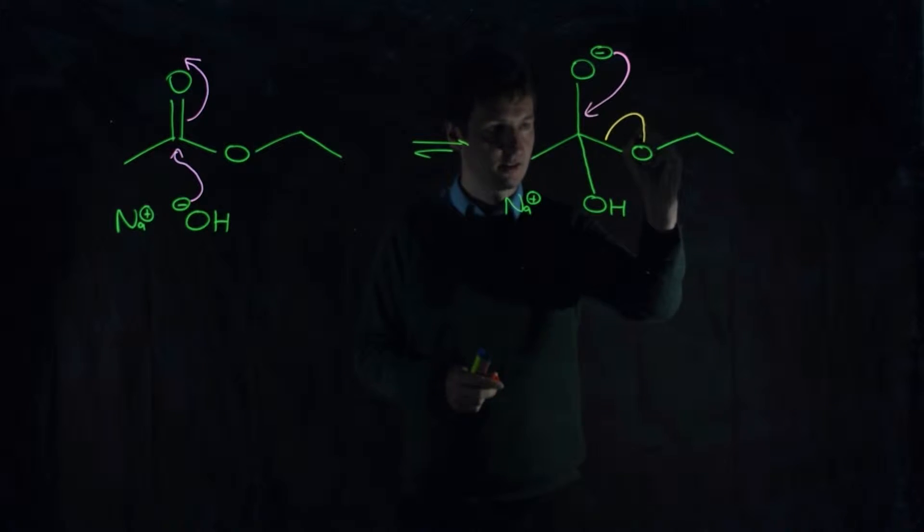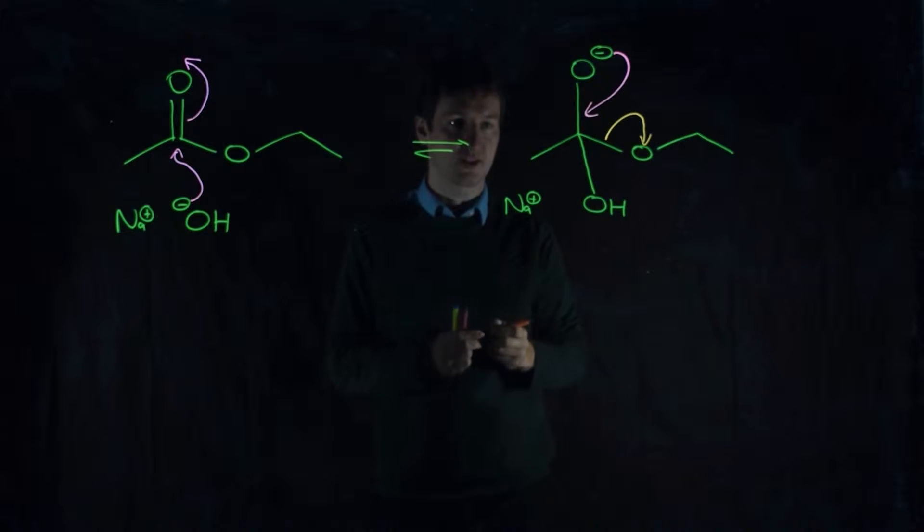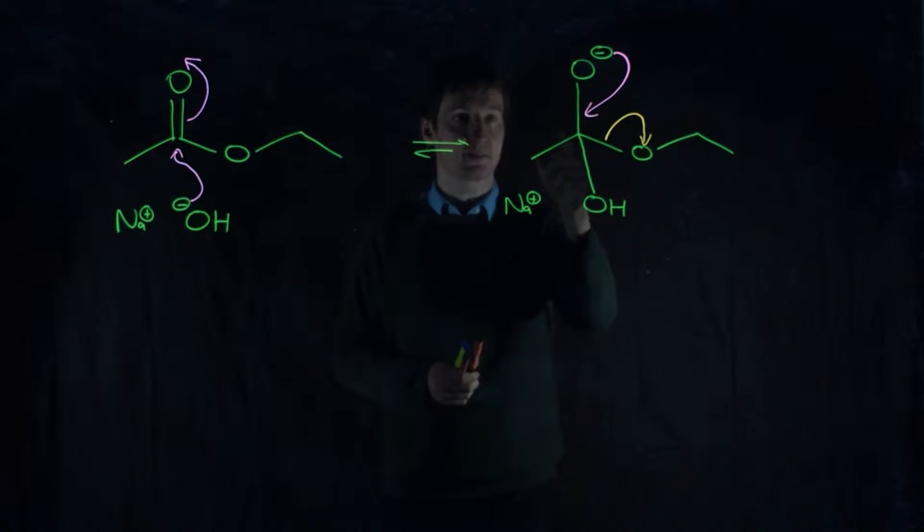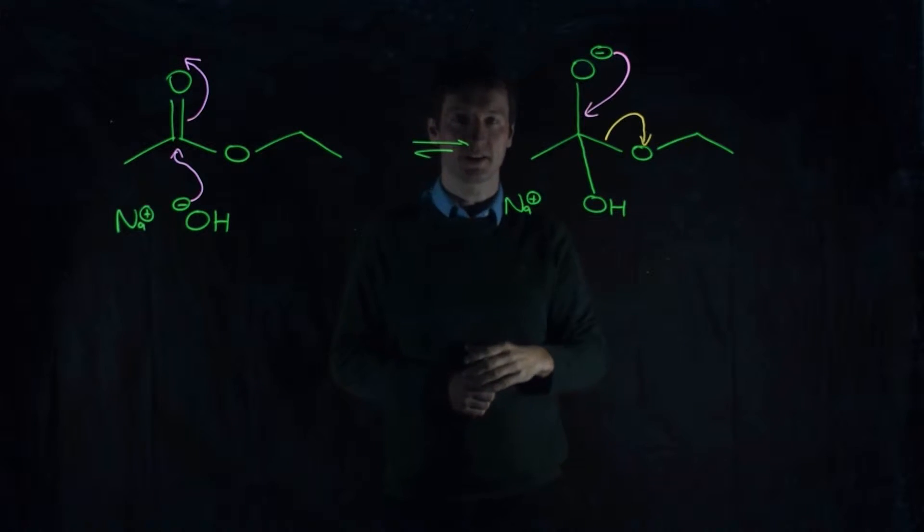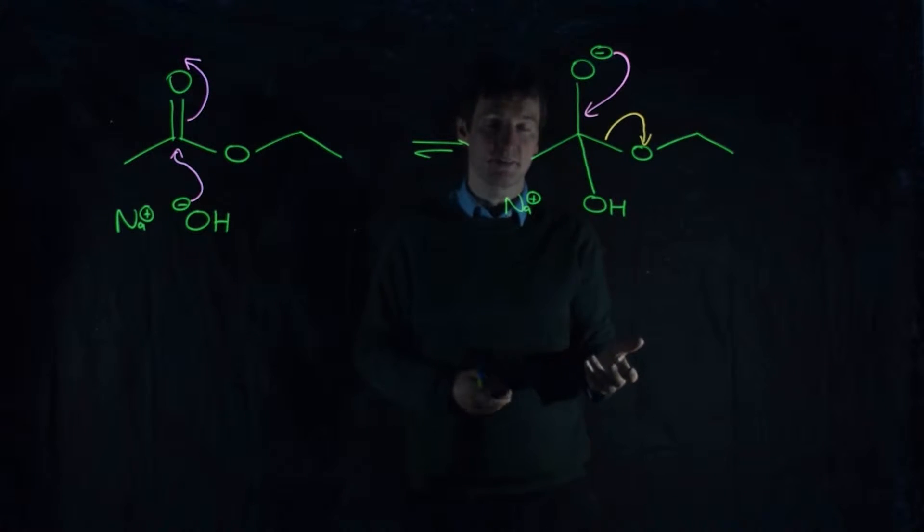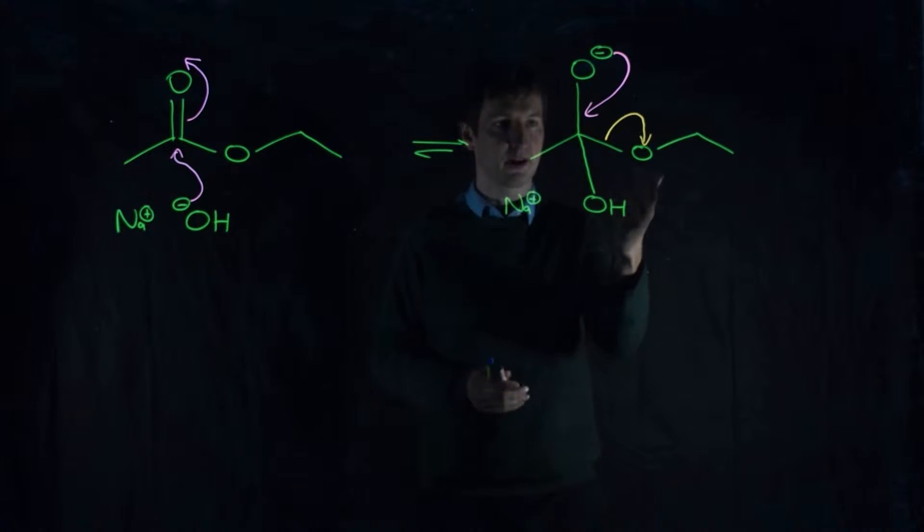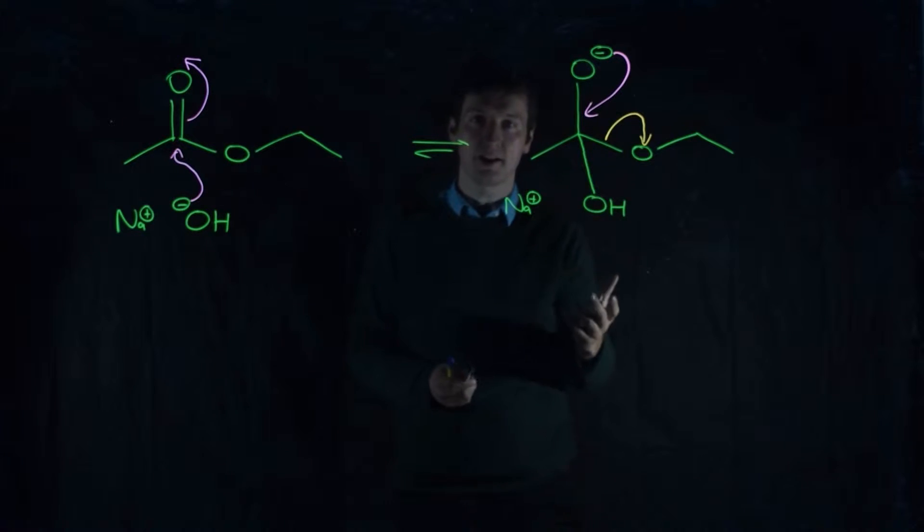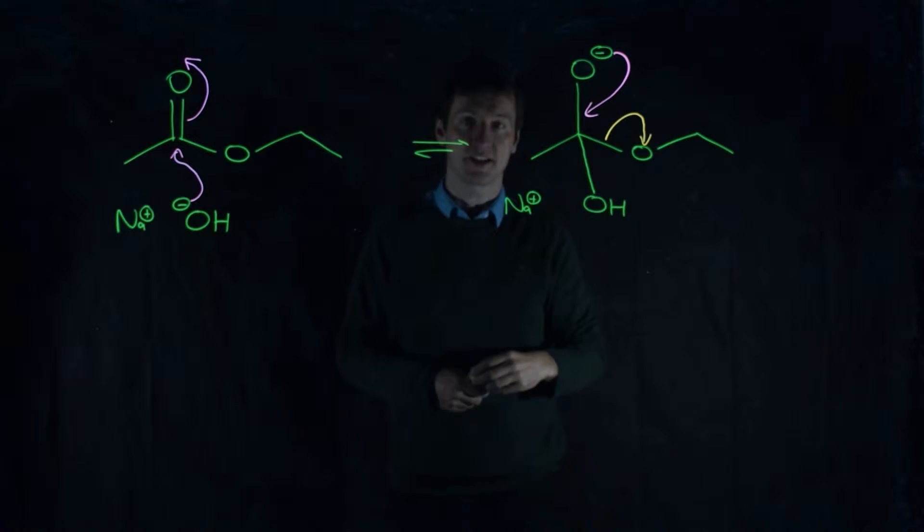So instead, it must be this pair of electrons out onto that oxygen there. Now, we did, of course, have the possibility of taking that pair of electrons and putting on the carbon. But as I say in many of these videos, you're never going to kick out a carbon with a negative charge on it when there's a possibility of kicking out an oxygen with a negative charge. A carbanion is a really much less energetically favourable thing. So let's continue.